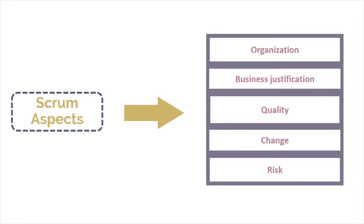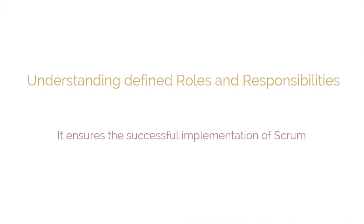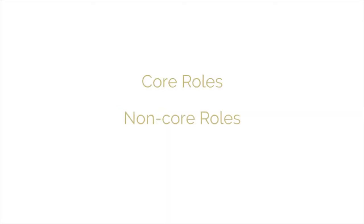We will be discussing all of them one by one, but let's first start with the very first aspect, organization. Let's understand the defined roles and responsibilities in a Scrum project, because defined roles and responsibilities ensure the successful implementation of Scrum. Scrum roles fall into two broad categories: core roles and non-core roles.